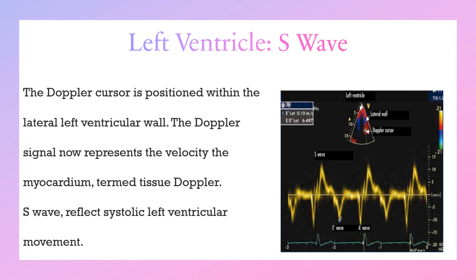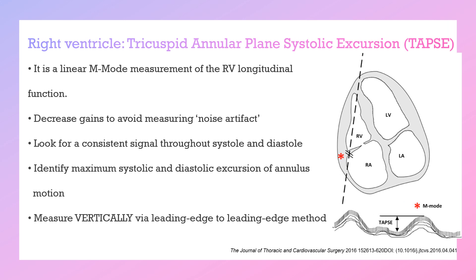The third echo parameter for assessing the left ventricle is the S wave. In the apical four-chamber view, the Doppler cursor is positioned within the lateral left ventricular wall. The Doppler signal represents the velocity of the myocardium, termed the tissue Doppler S wave, which reflects systolic left ventricular movement. For ECMO weaning, it should be more than 6 cm per second.